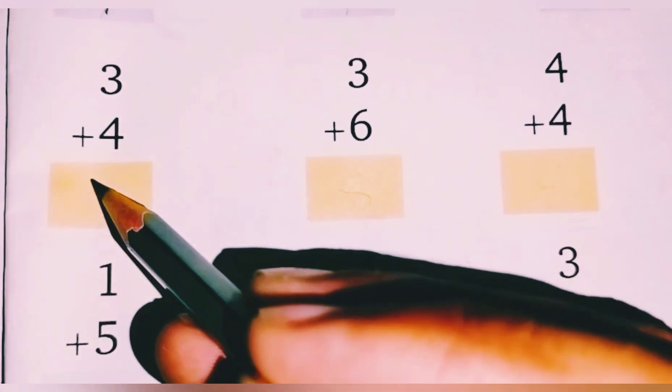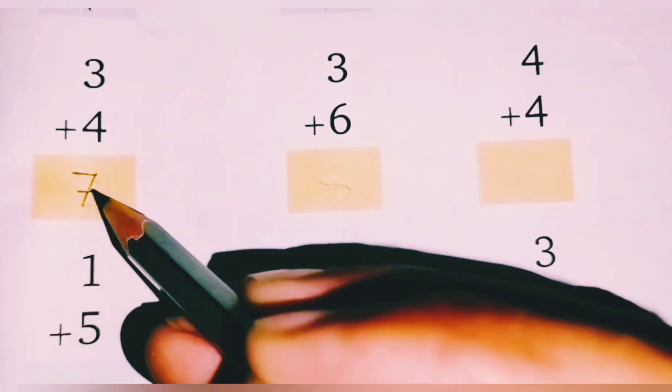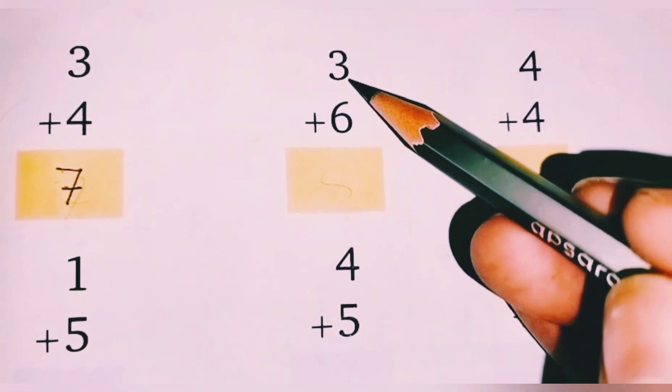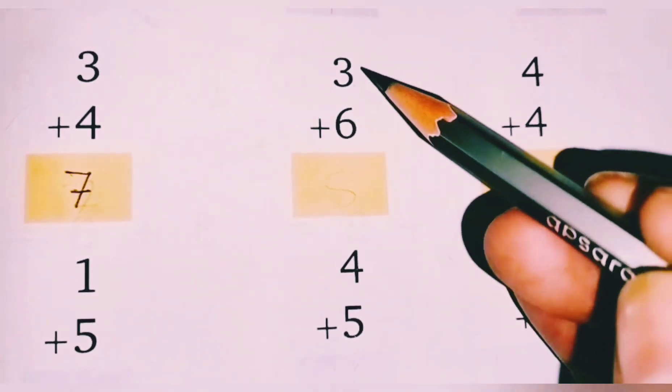7, seven. 3 plus 4 equals 7. Okay, and then the next number is 3, which number? 6.